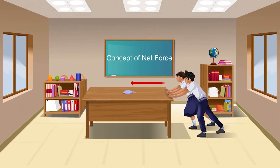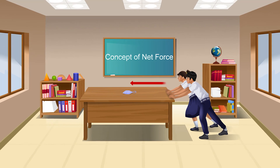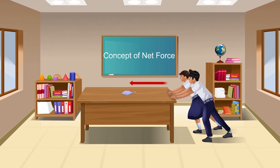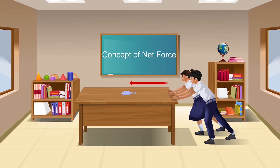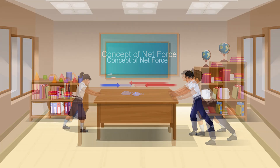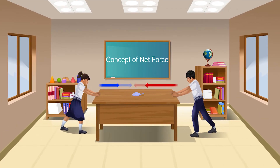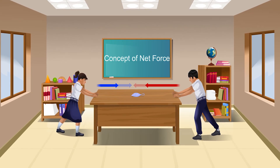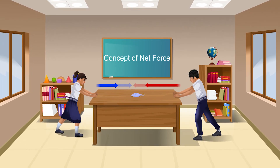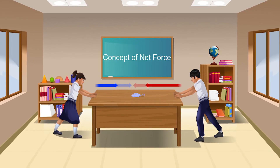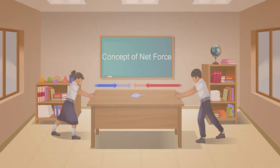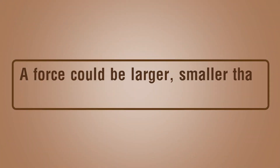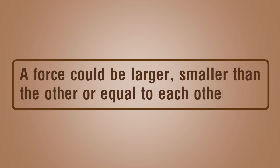If forces are applied on an object in the same direction, the forces add to one another, resulting in a larger force. If two forces act in opposite directions on an object, they cancel each other and the net force is the difference between the two forces. A force could be larger, smaller than the other, or equal to each other.